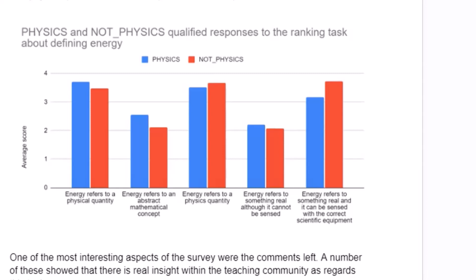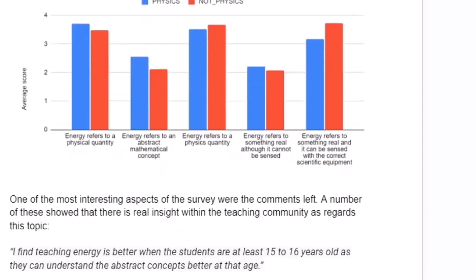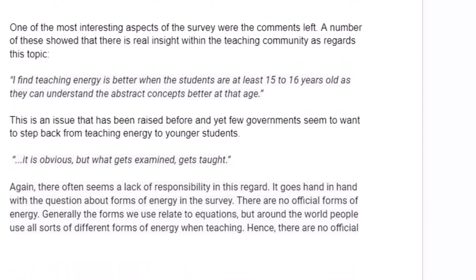Some of the most elucidating parts were actually some of the comments. Some of them are definitely borne out by experiences of other people and research. As one commenter pointed out, older students — 15 to 16 year olds — can understand these abstract concepts better. That view has got some backing elsewhere. The issue is that we tend to talk about energy and use those ideas early on in other areas as well as just physics — in biology, they'll talk about energy; in chemistry, they'll talk about energy — and they do that much earlier on.